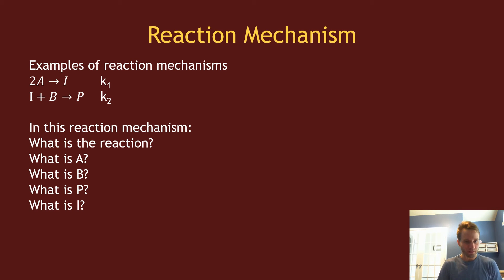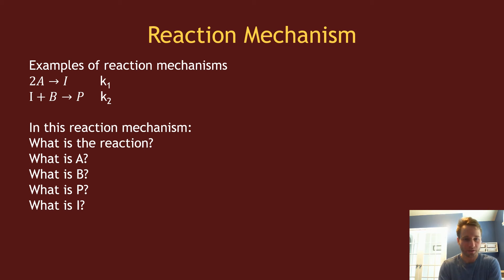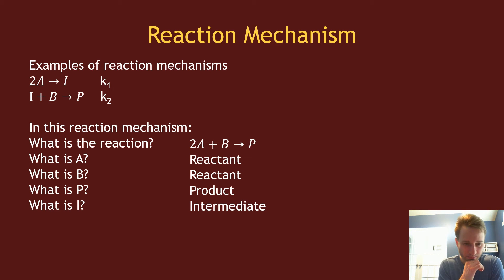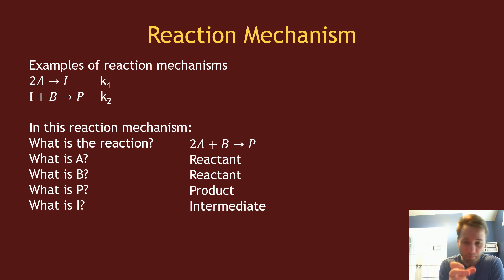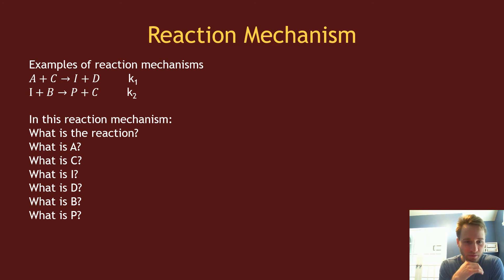Here's an example of a mechanism: 2A going to I, and then I + B going to P. This overall mechanism gives us an overall chemical reaction of 2A + B going to P. A and B are reactants, P is a product, and I is what is referred to as an intermediate — something that exists in the reaction mechanism but doesn't appear in the overall chemical reaction. Intermediates exist temporarily: they get formed within the reaction mechanism and then consumed later on within that mechanism.